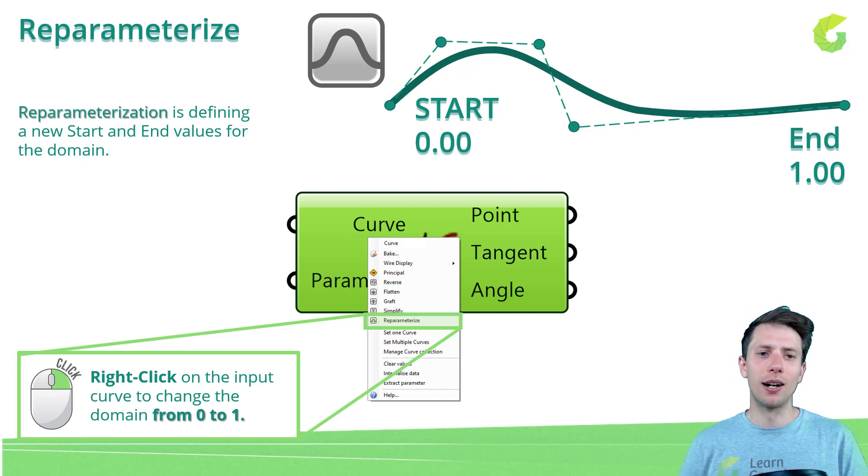So it's defining a new start and end value for the domain. And in Grasshopper, the domain is going to change from zero to one. In this course, we are going to work on re-parameterized curves. So remember, every time when we are going to find some parameters, we are going to work on curves with the domain from zero to one. So just right click and choose re-parameterize.